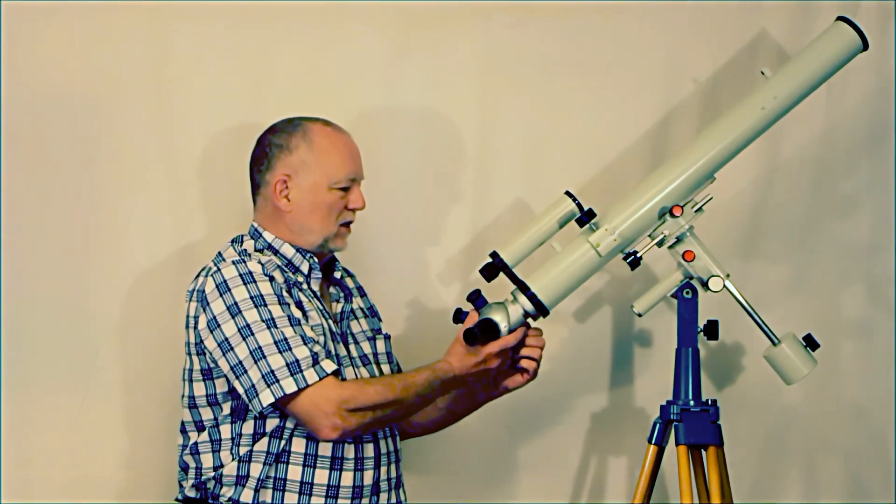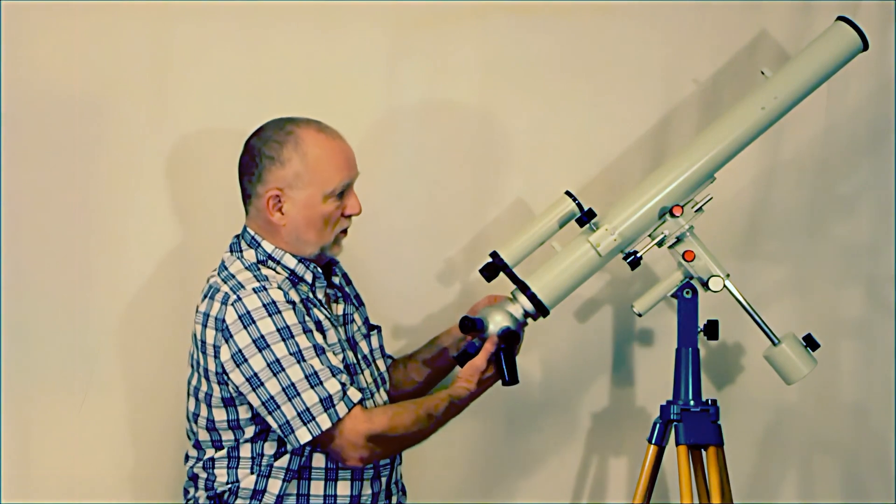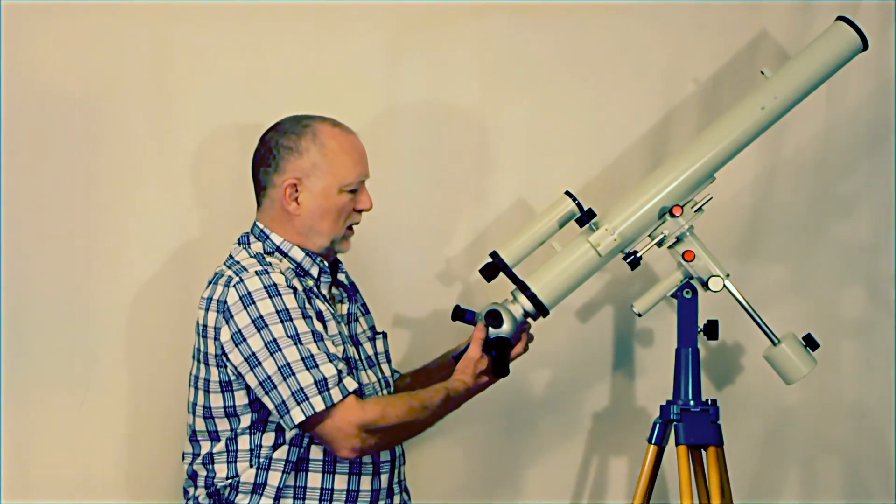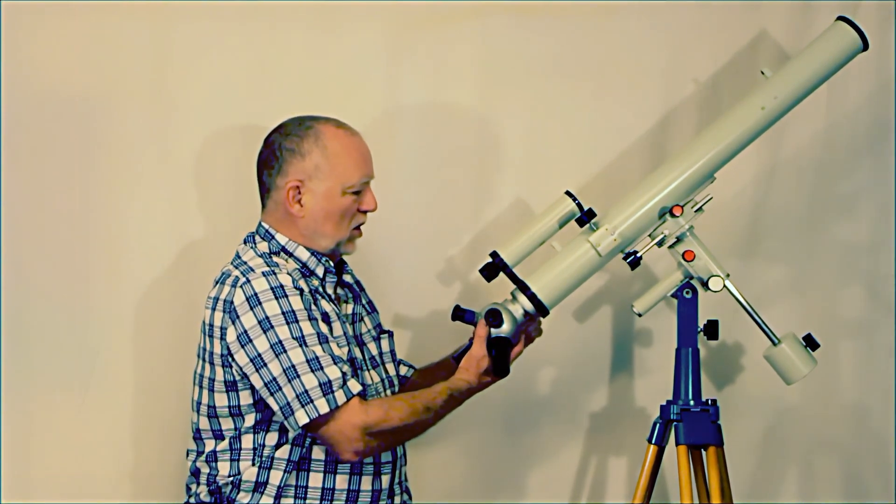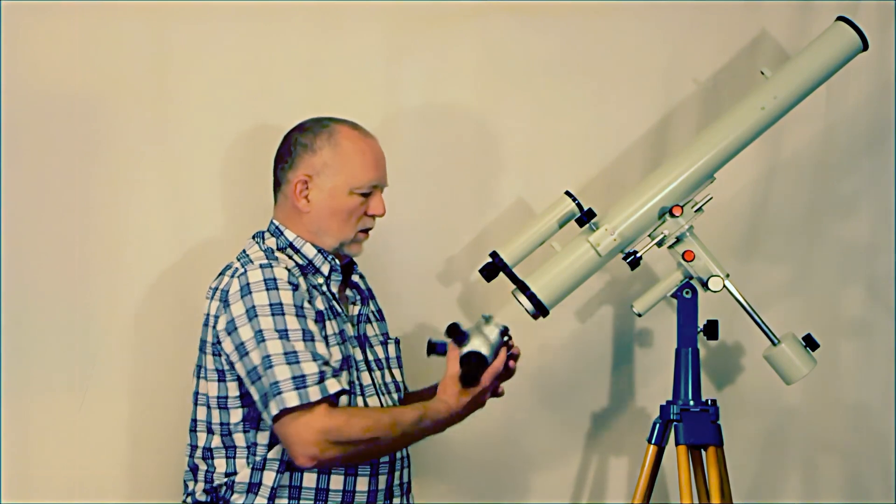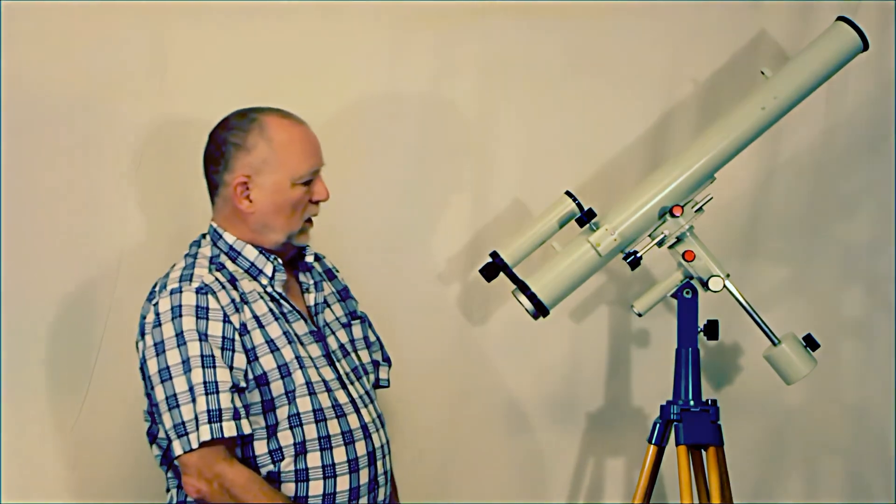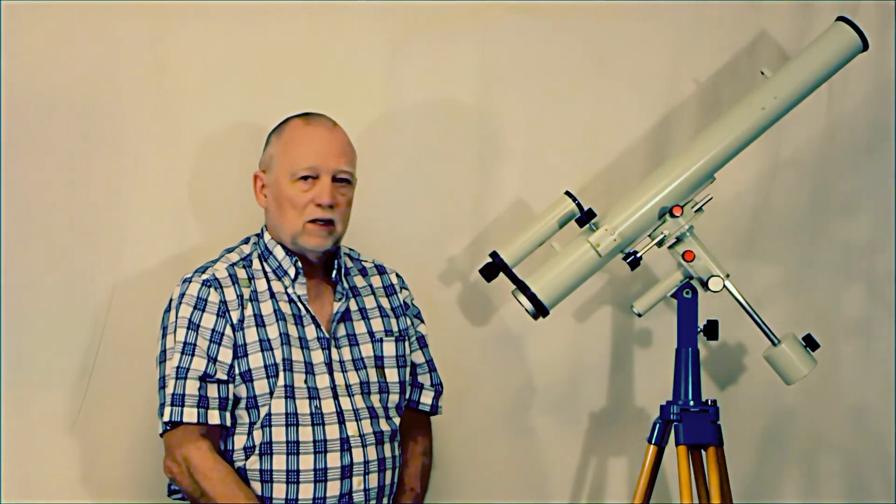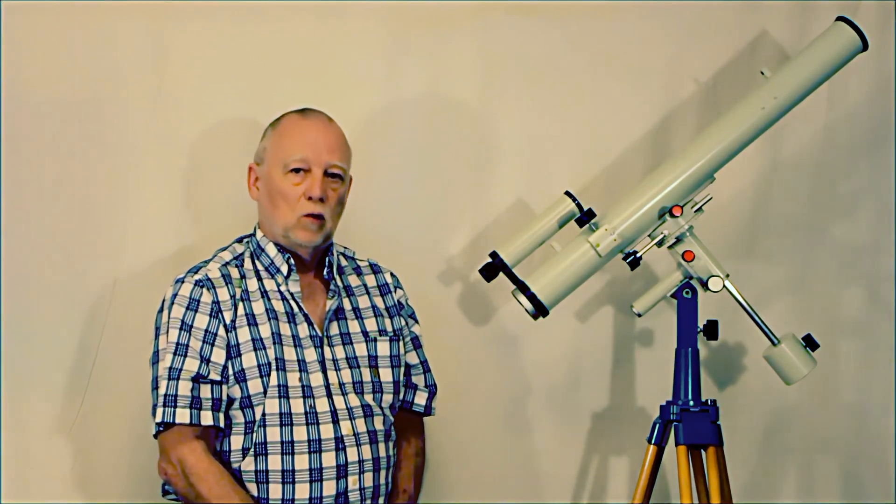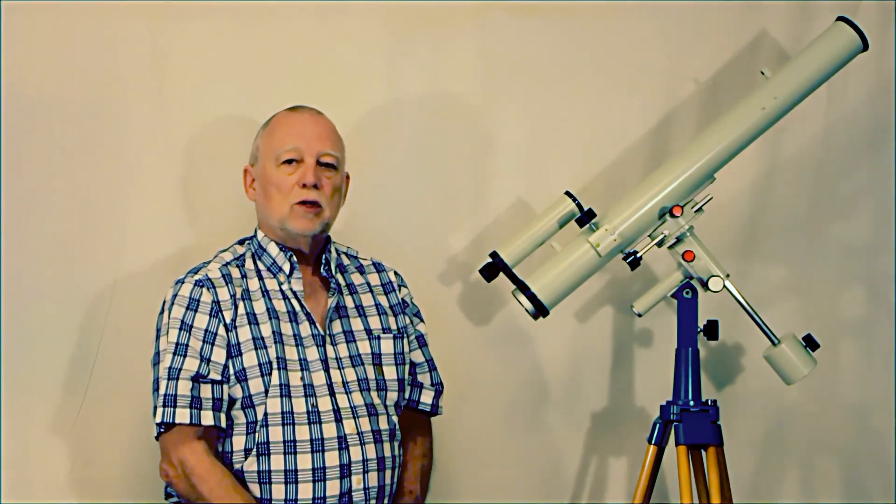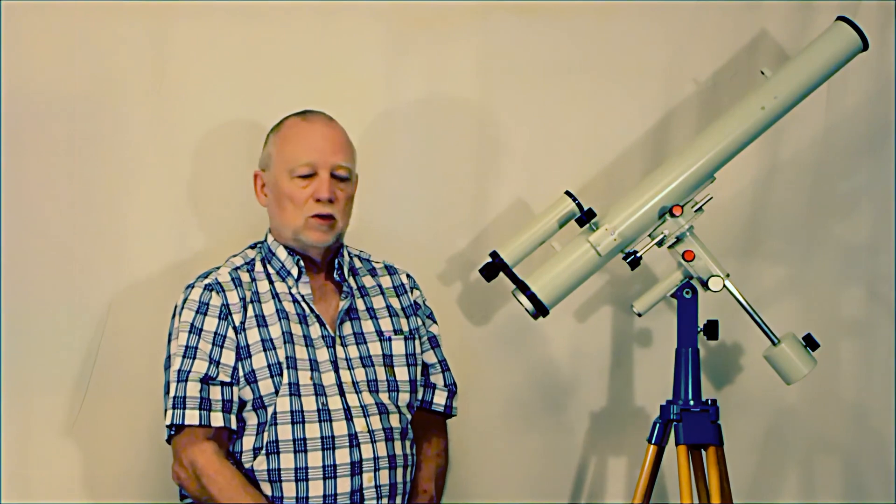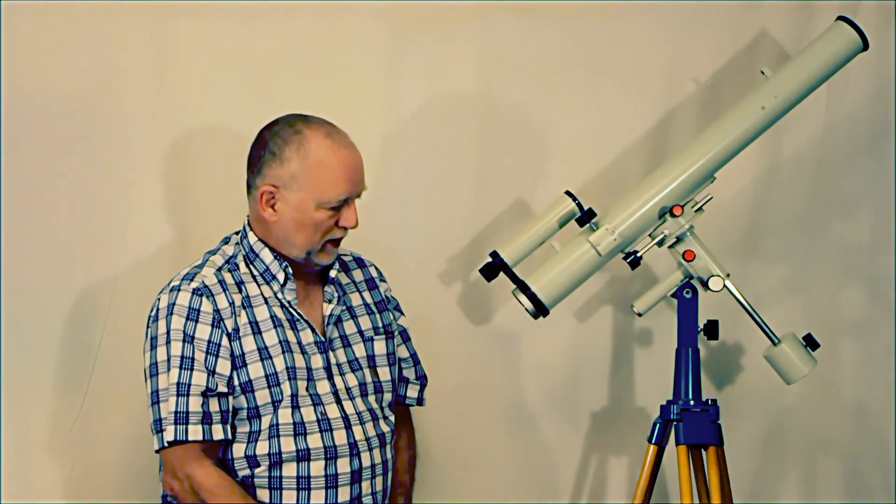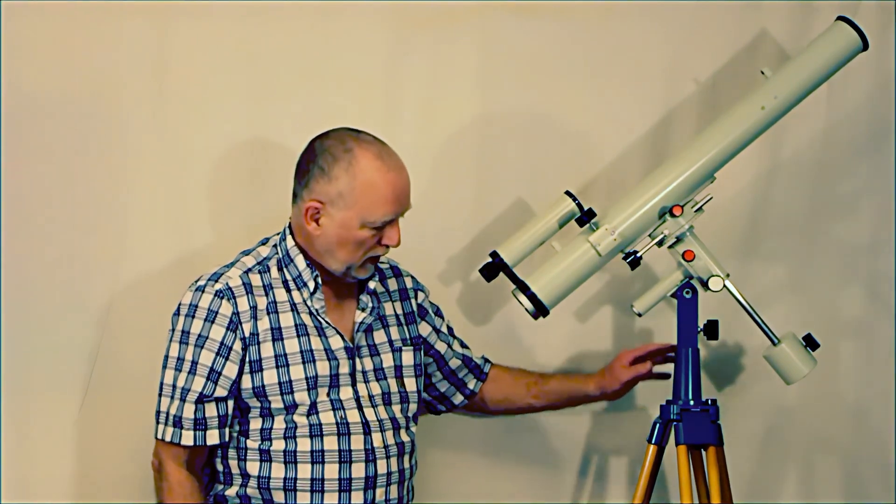Now this thing, you can rotate this. So this rotates for convenient observing anywhere. This also comes off through a quick disconnect. So there's the basic Zeiss 63 by 840. 63 millimeters in aperture, 840 millimeters in focal length. Telementor. It comes on a sturdy mount.